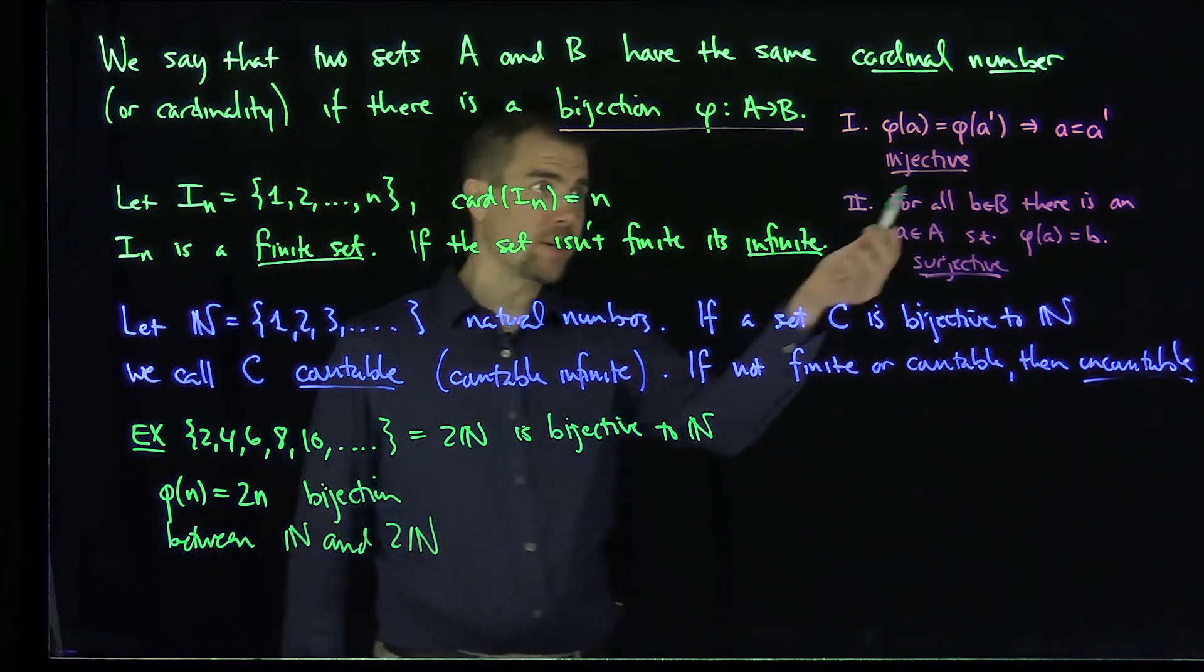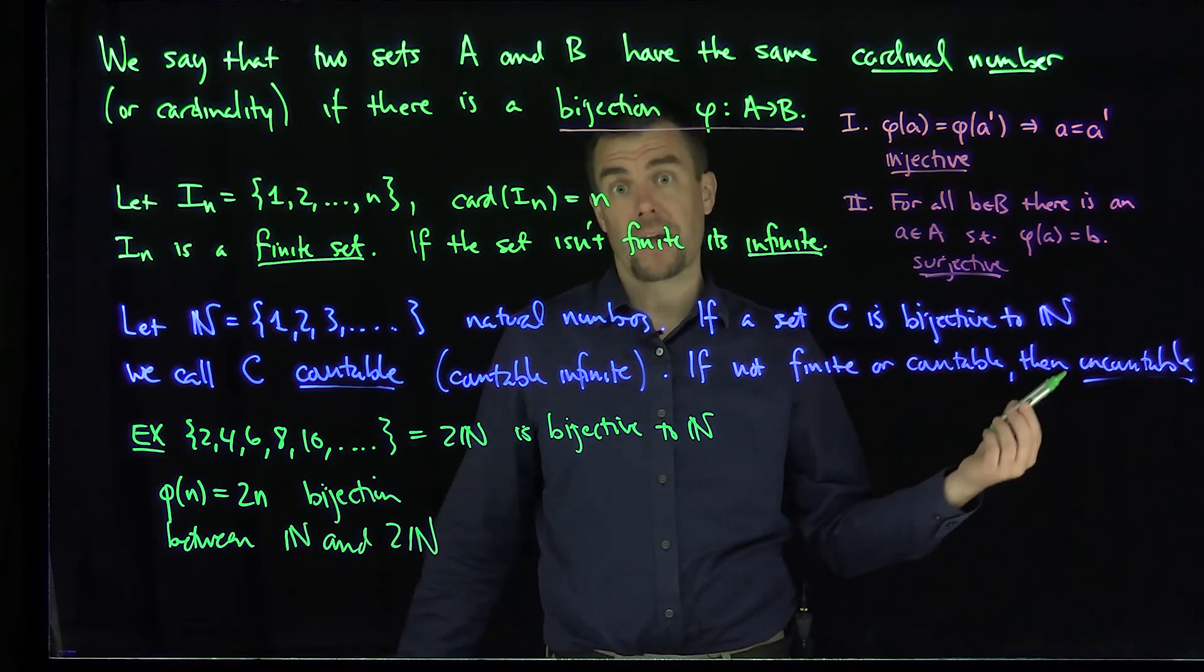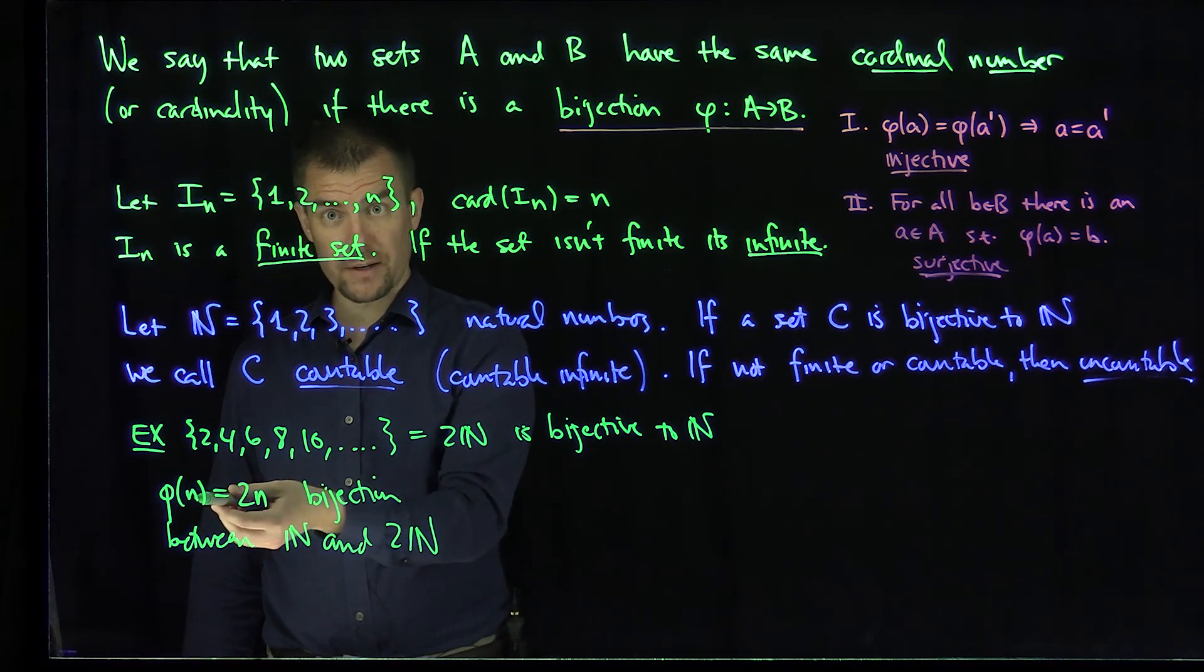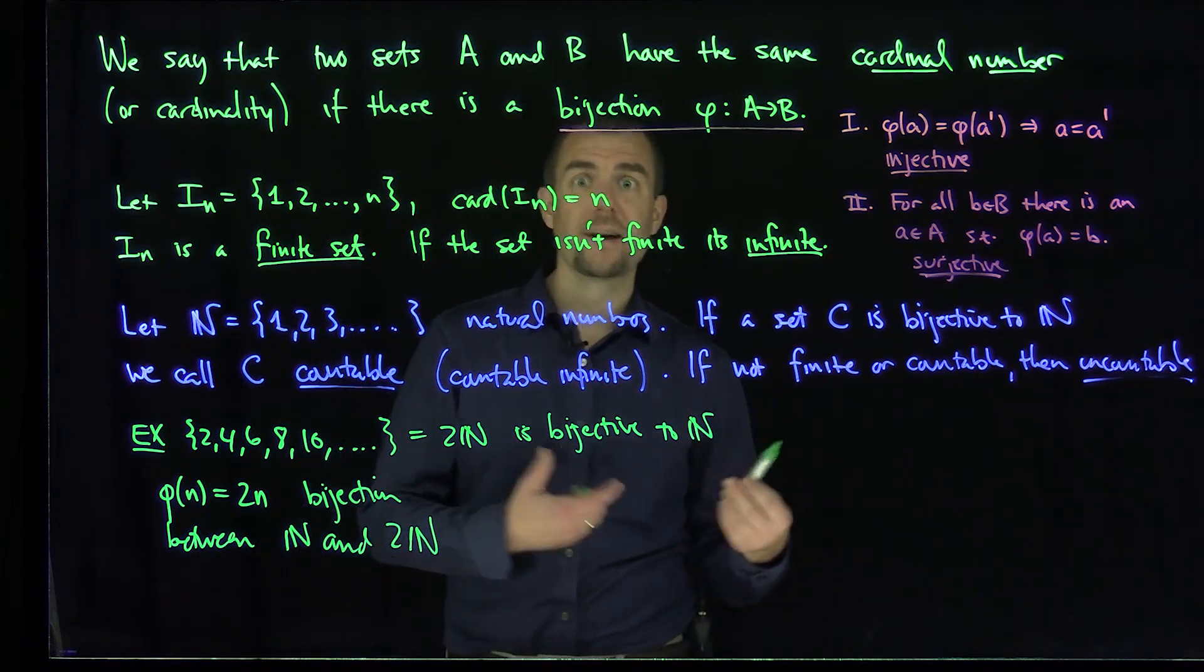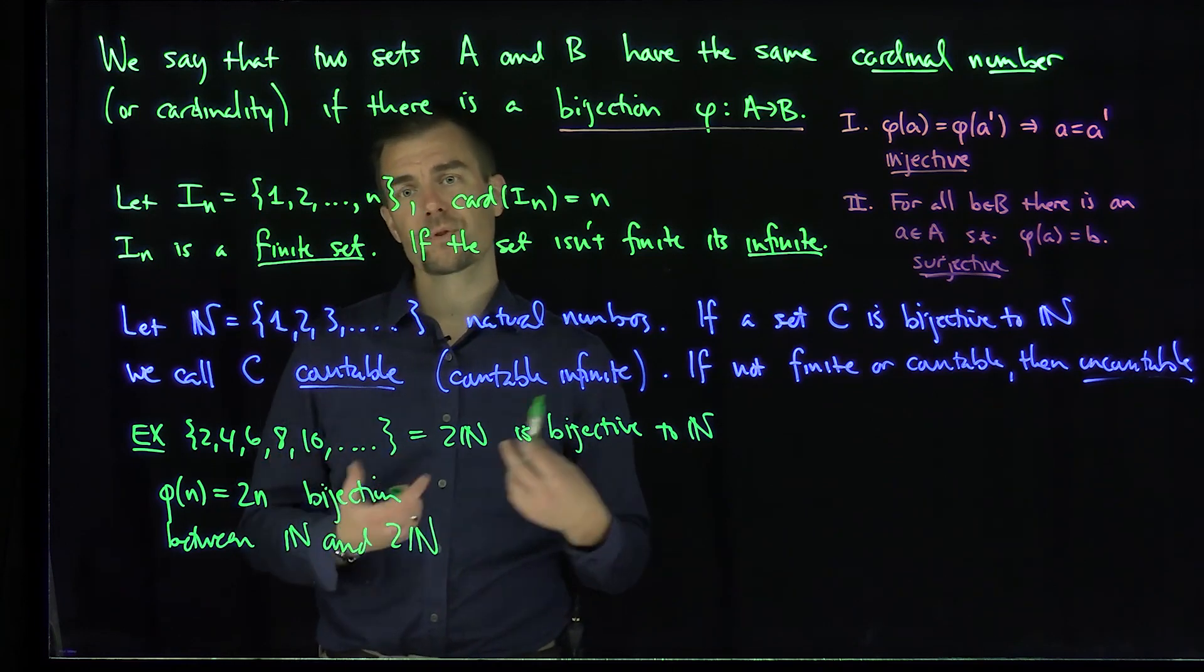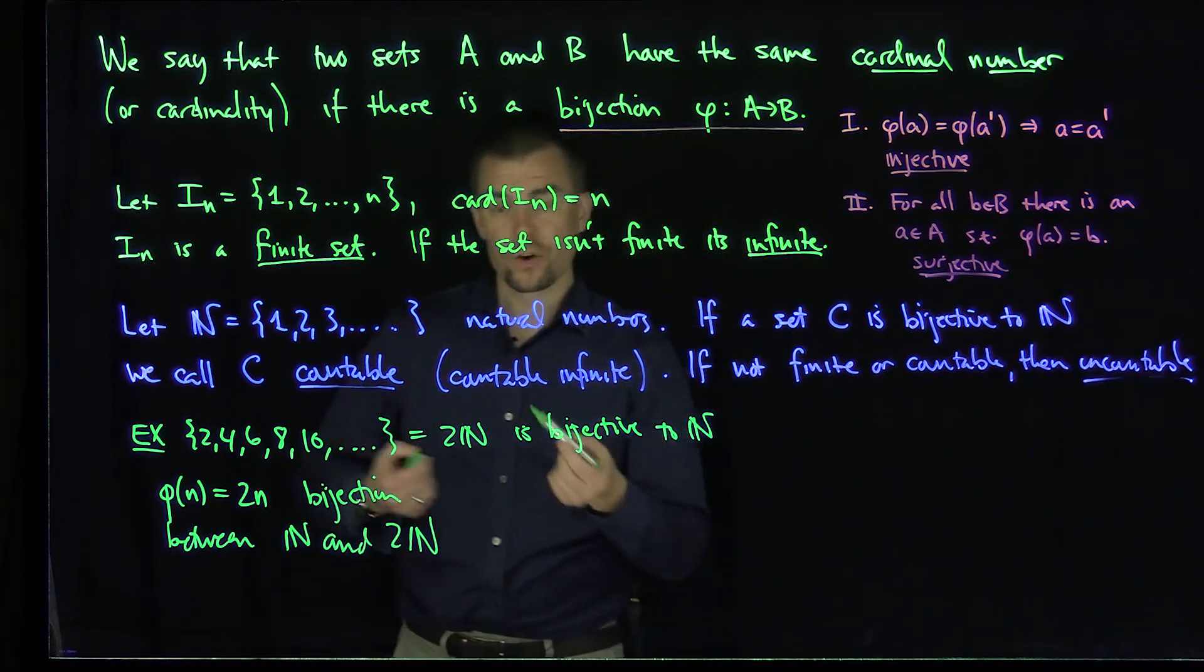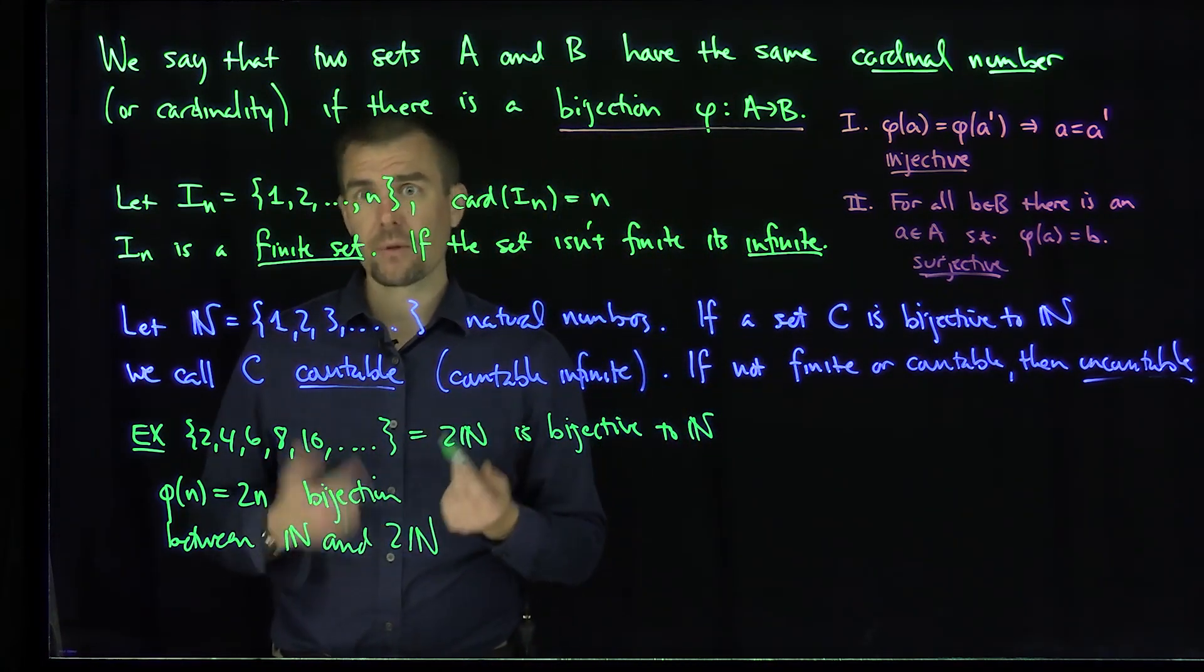Because if 2n is equal to 2m, cancel the twos, m is equal to n. That's easy. So it's injective. And likewise, if I have like a 12, I can get to 12 by plugging in a 6. I can get to 24 by plugging in a 12. So we can see that's clearly surjective as well. Everything in the set 2N comes from something that looks like 2 times n. So twice n is bijective to N. In other words, 2N is countable.